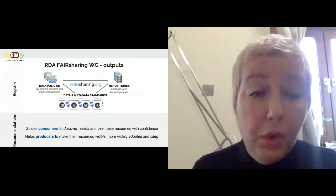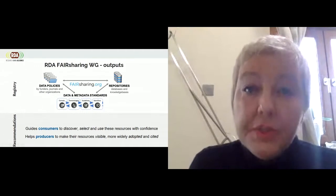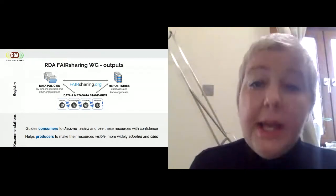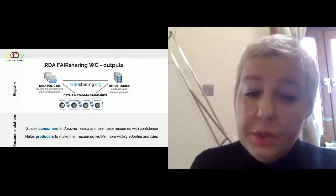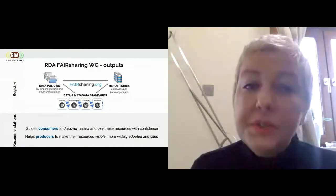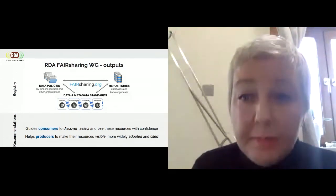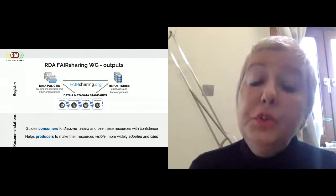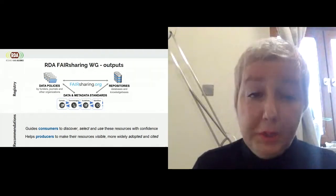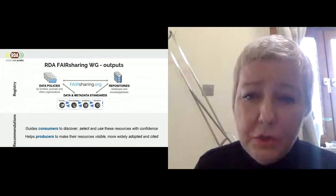This is just briefly to make sure that you all know what this working group has delivered, which is a registry of standards, repository and policy, which are described and connected. The output of the working group has been a registry, as well as a set of recommendations for different stakeholders on how to use this registry. The guidance is for consumers of these standards, repository and policy, so that they can discover and use them with confidence because they are described and connected. The recommendation also helps producers of these resources — so the developers of the standard, the repository, or the policy — to make sure that their resource is visible to people perhaps outside their direct disciplines, so that it can be more adopted and more cited.